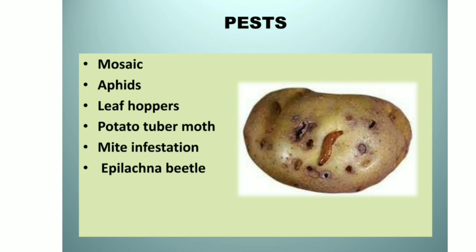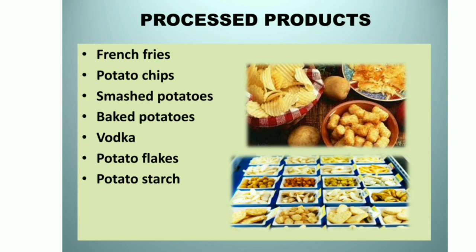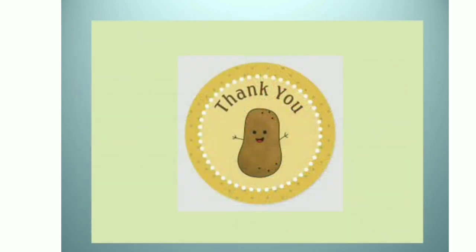Pests: some of the pests that attack potatoes are mosaic aphids, leaf hoppers, potato tuber moth, mite infestation and epilachna beetle. Diseases: some of the diseases in potatoes are early blight, late blight, purple top roll, common scab, fusarium dry rot and potato virus Y, and Pythium leak. Processed products include french fries, potato chips, mashed potatoes, baked potatoes, vodka, potato flakes, potato starch and many more. That is all about my presentation on production technology of potato. Thank you.